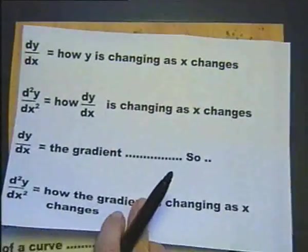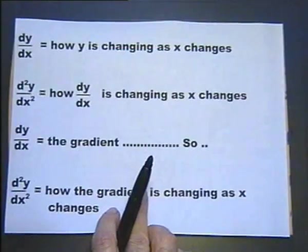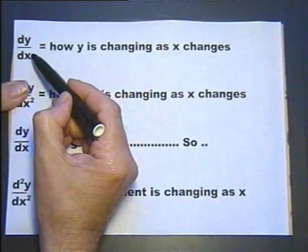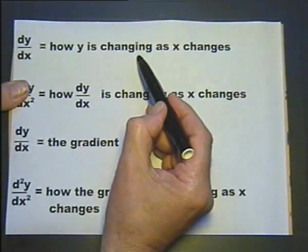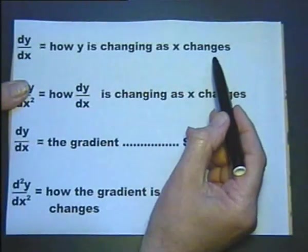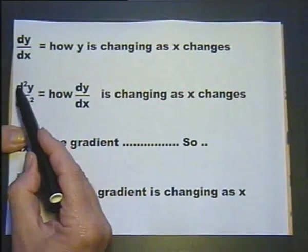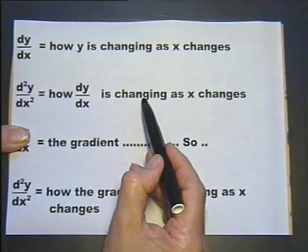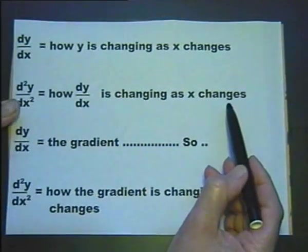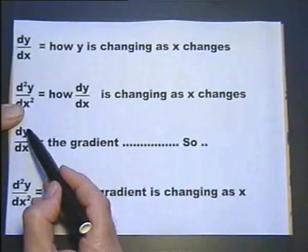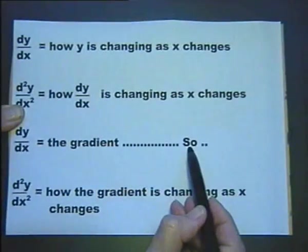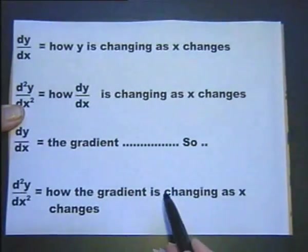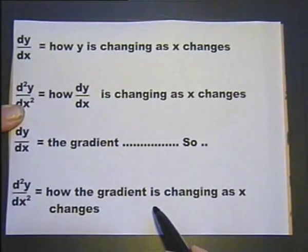Another way of looking at differentiation: the first differential, dy/dx, is how y is changing as x changes. The second differential, d²y/dx², is how dy/dx is changing as x changes. Since dy/dx is the gradient, d²y/dx² is in fact how the gradient changes as x changes.